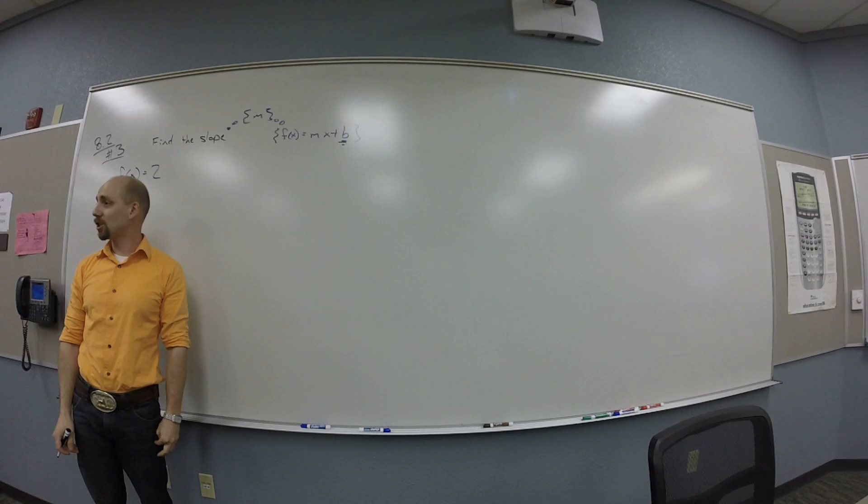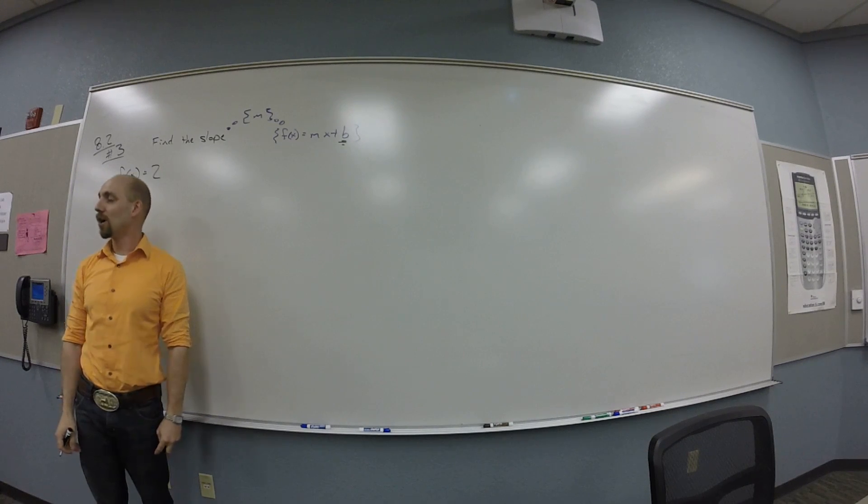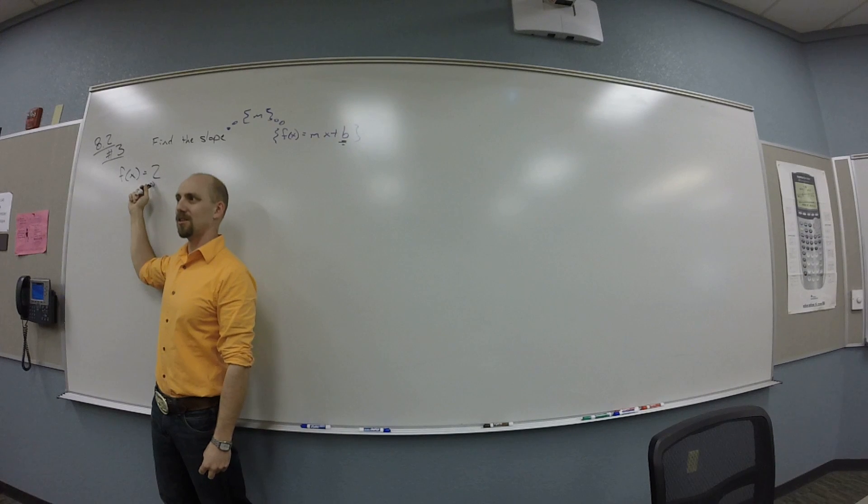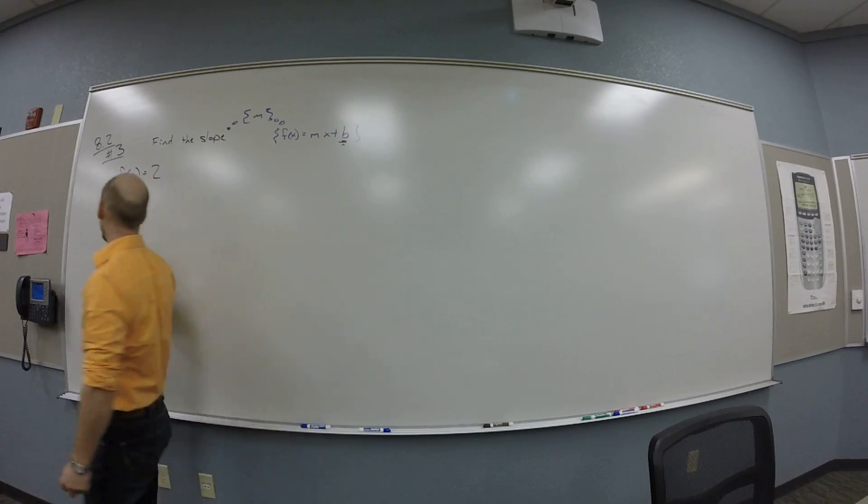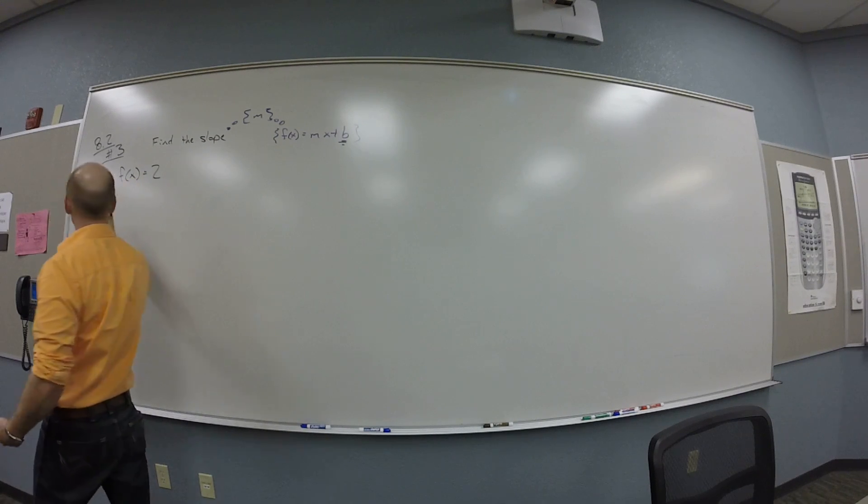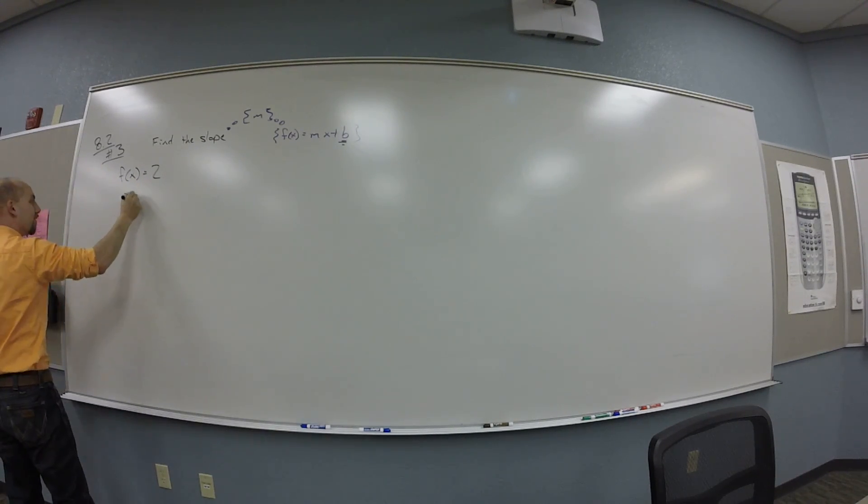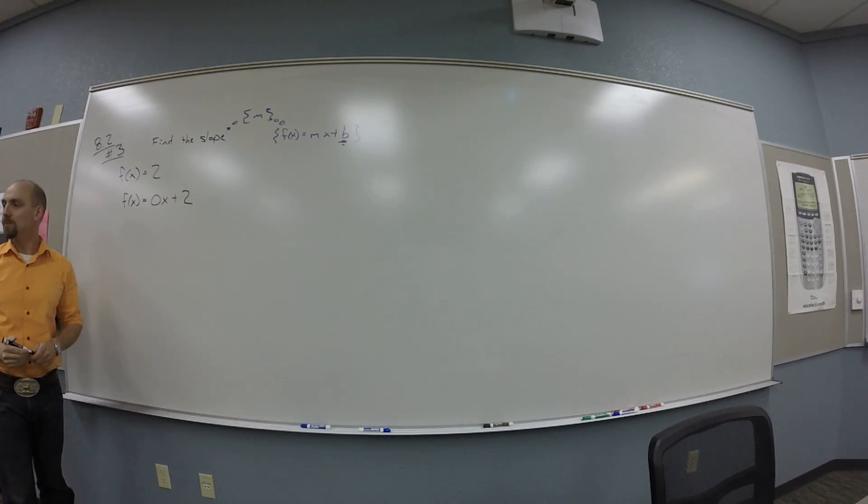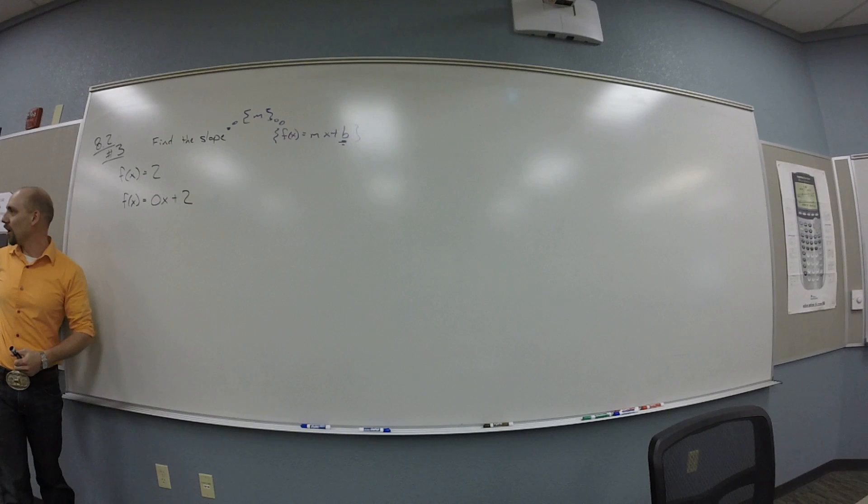The M has to be attached to an x. So how many x's are there here? You guys see that? There aren't any x's. So really, instead of writing this, it would be maybe more honest to write f of x is 0x plus 2. And then I can just match straight across the form, right?